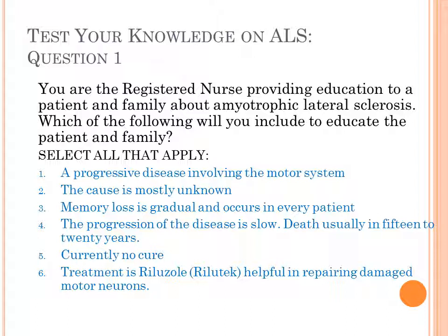Here's a practice question. You are the registered nurse providing education to a patient and family with ALS — select all that apply. One: a progressive disease involving the motor system. Two: the cause is mostly unknown. Three: memory loss is gradual and occurs in every patient. Four: progression is slow and death is usually in 15 to 20 years. Five: currently no cure. Six: treatment is riluzole, helpful in repairing damaged motor neurons. Numbers one, two, five, and six are correct — we did not discuss memory loss at all, and life expectancy is three to five years, not 15 to 20.